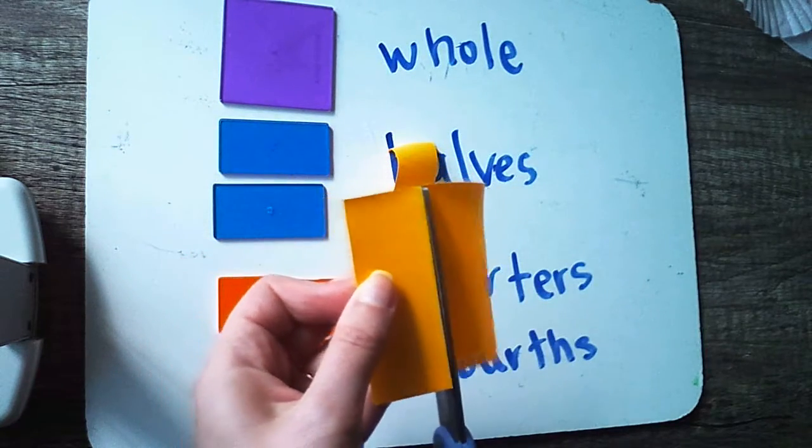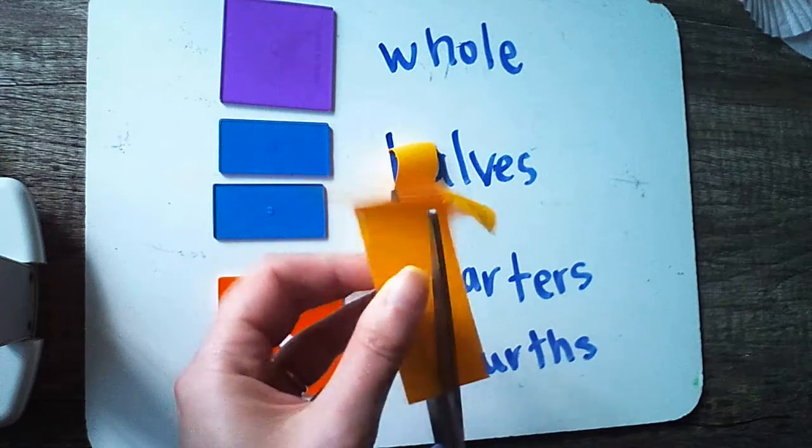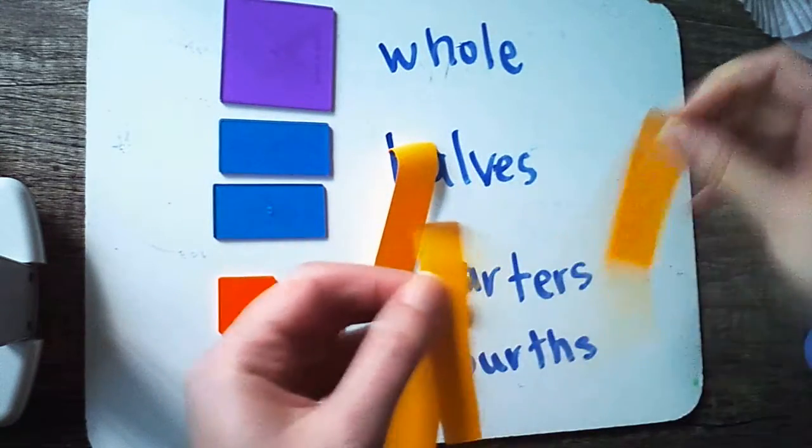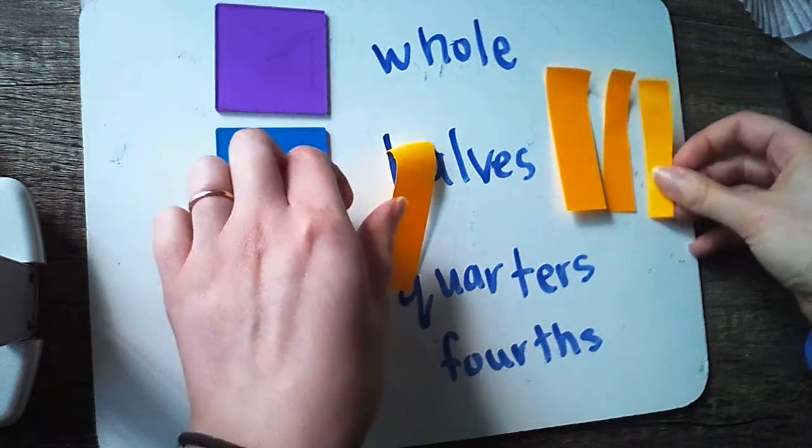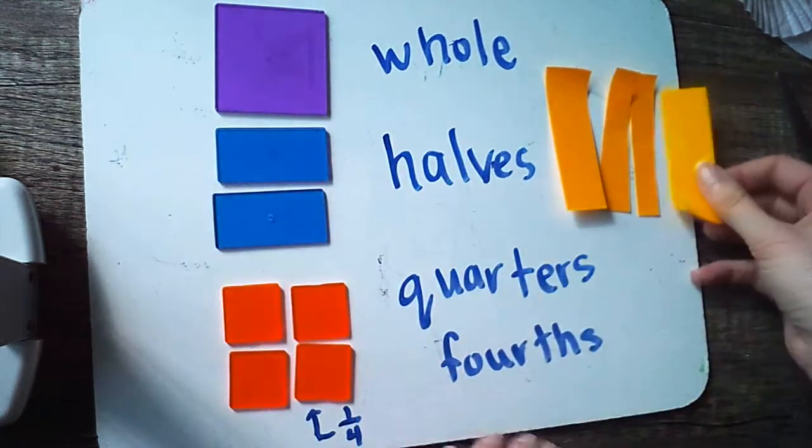One, two, three, four. And when I put these fourths together, I've got one whole. These are different items that you can use at home to help you practice.